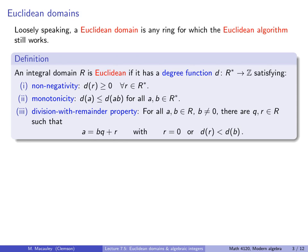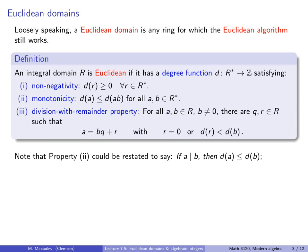And finally, the division with remainder property. For all elements A and B in the ring where B is non-zero, there are elements Q and R — the quotient and remainder — such that A equals B times Q plus R, and this remainder R has to either be zero or its degree has to be less than that of B. Note that the second property could be restated to say: if A divides B, then the degree of A is less than or equal to the degree of B.